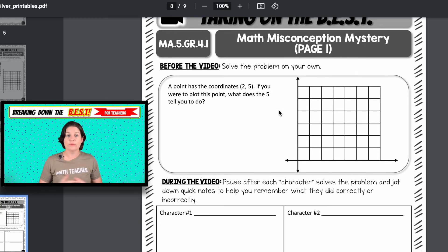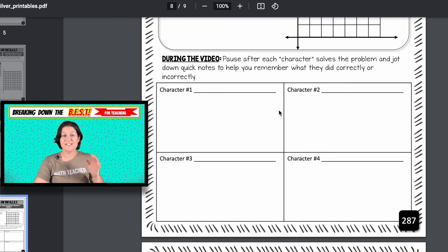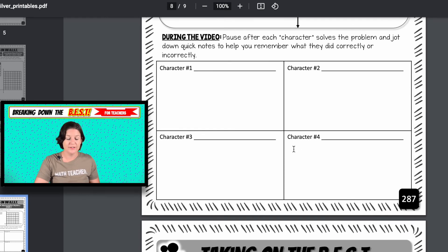But basically what you do, you click play and I walk you through the whole thing. First, your students will solve the problem on their own. And then they will watch as four characters solve that same problem. Three of those characters are going to make a mistake and only one of them is correct. And yes, those characters are just me dressed up in silly costumes with silly accents, highlighting some errors that students commonly make.